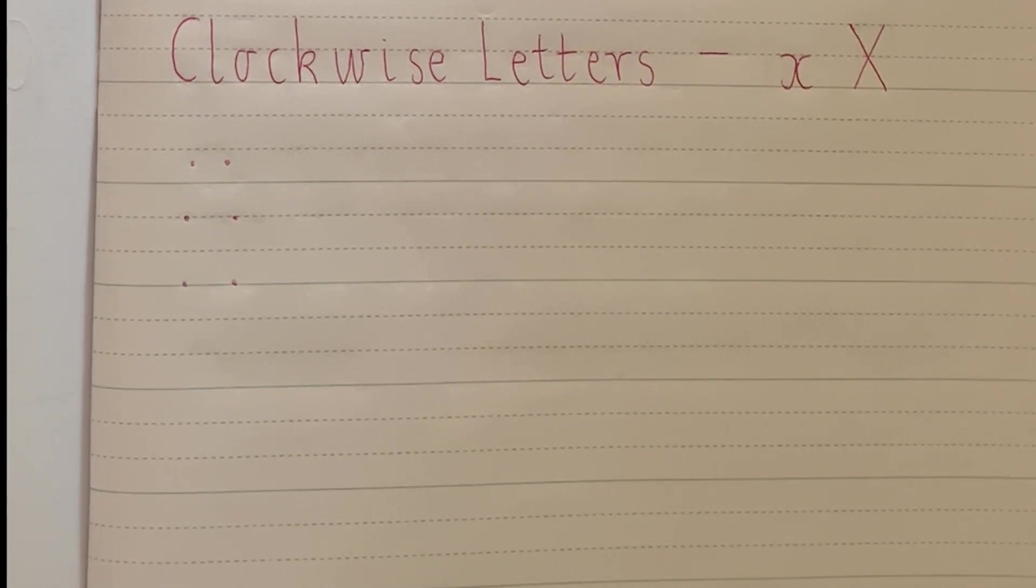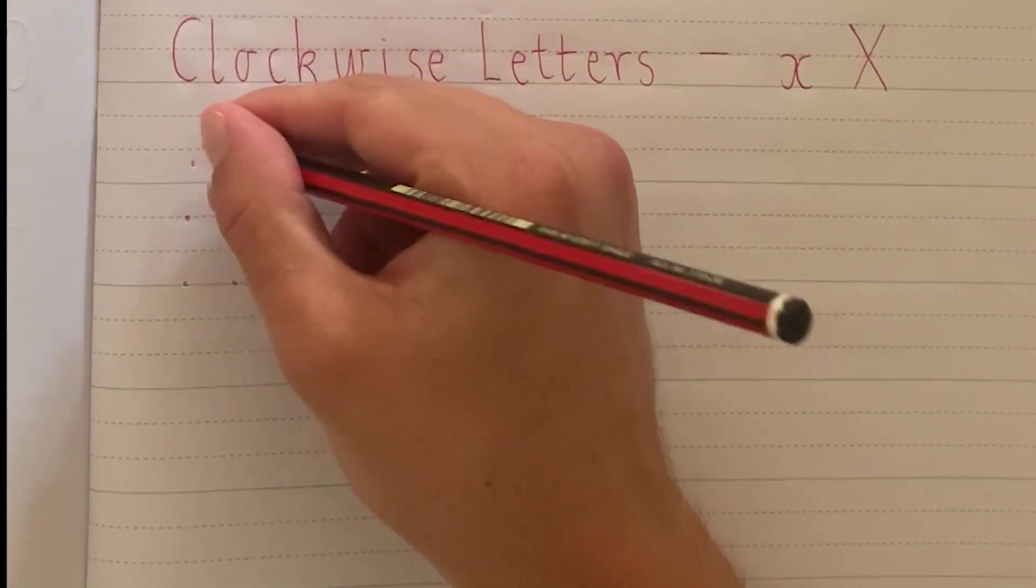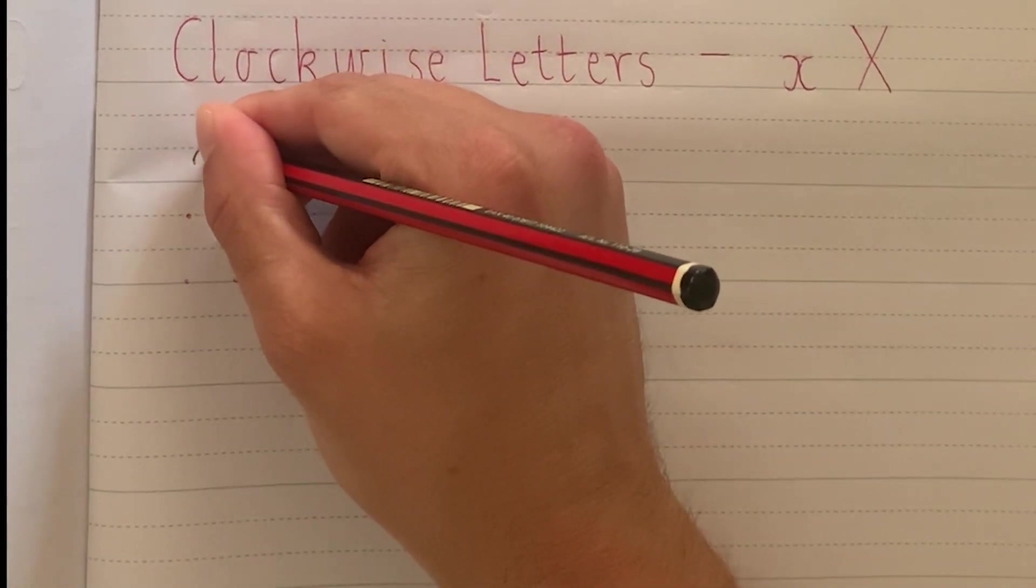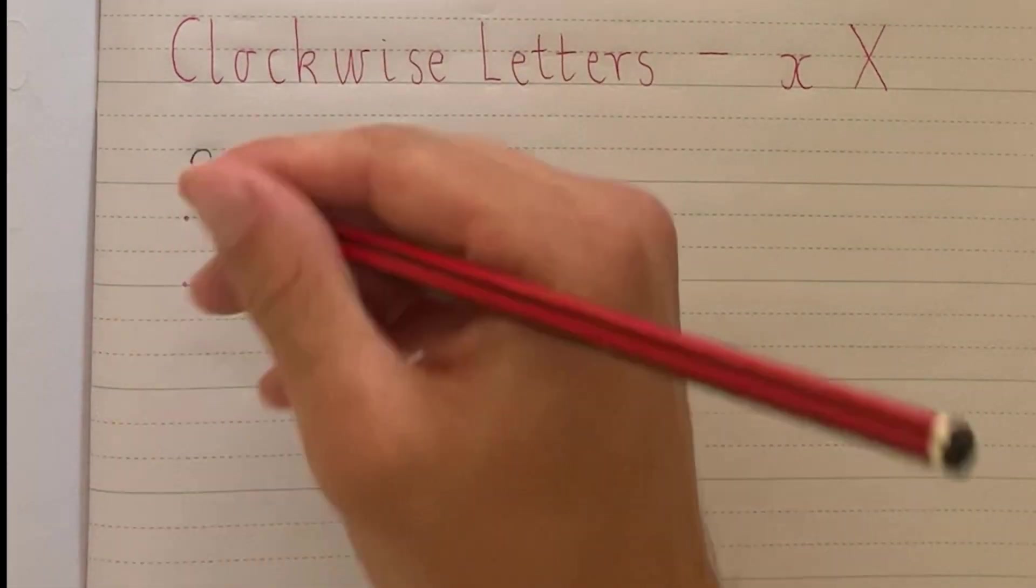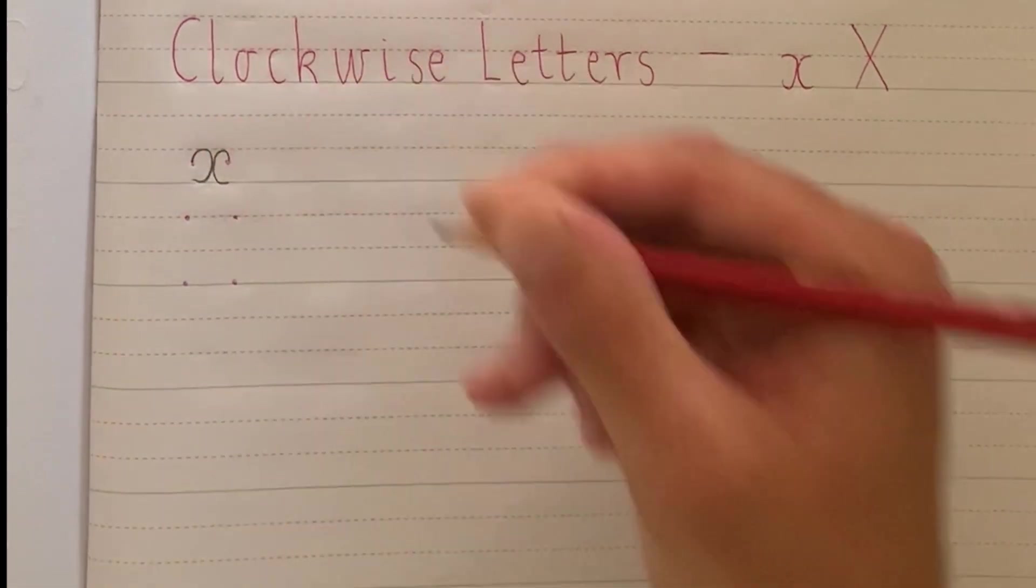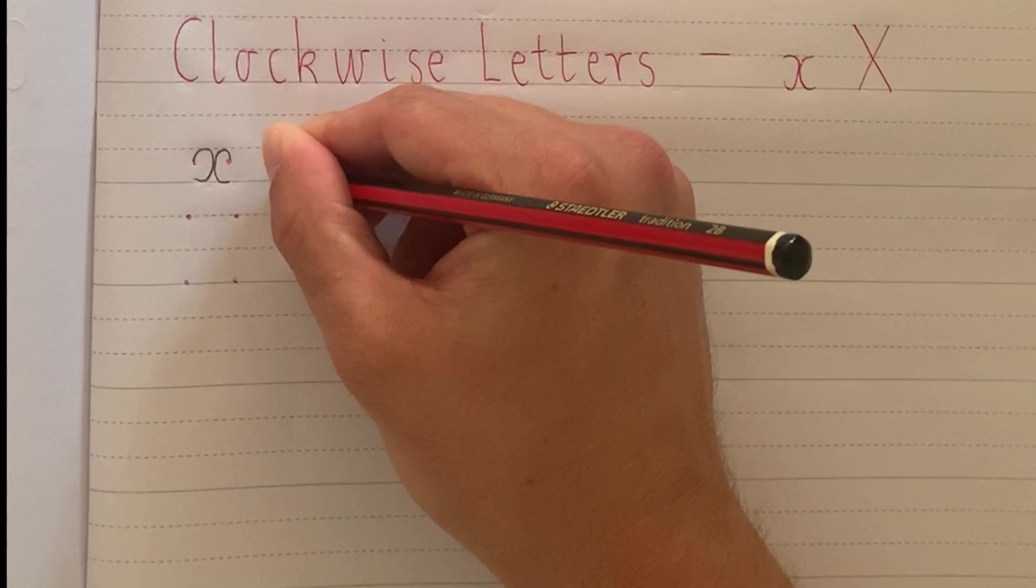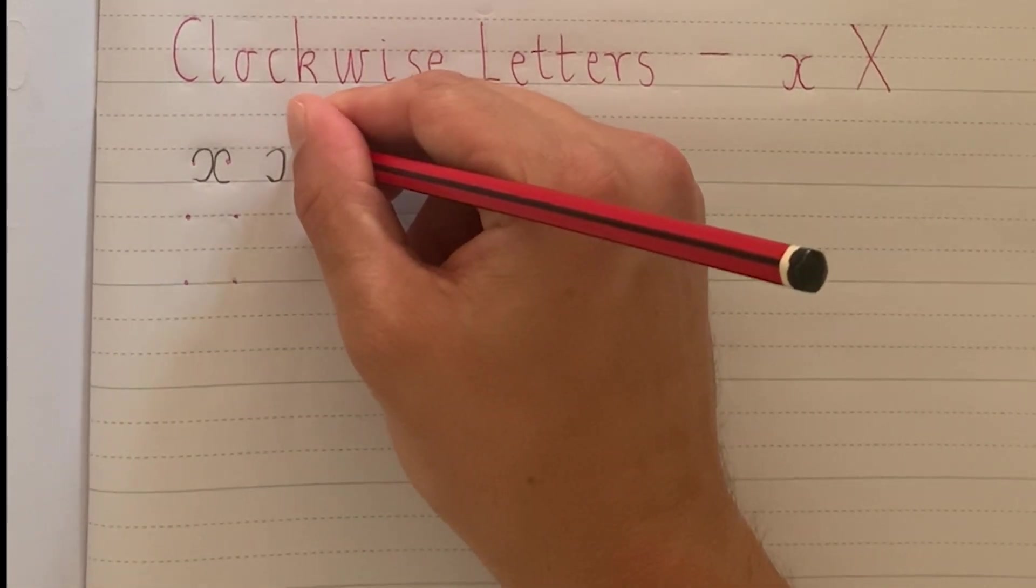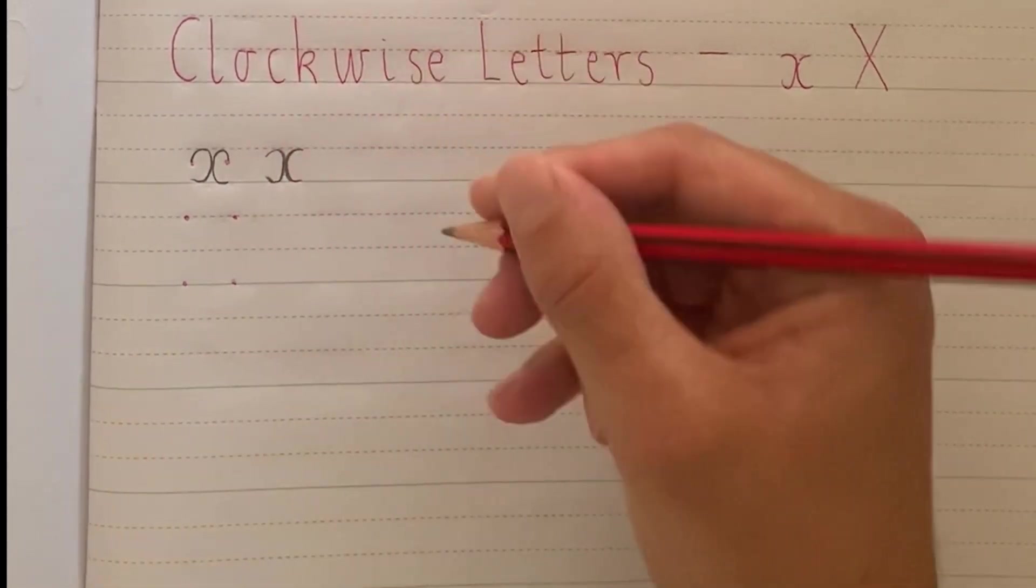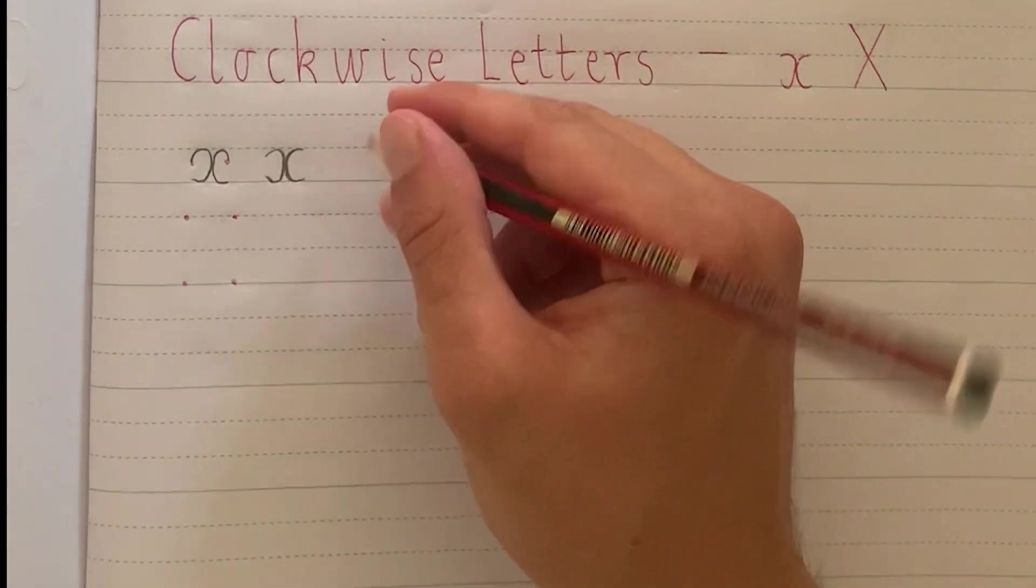So we're going to start with the lowercase x. The lowercase x begins just below the dotted third and it's sort of like doing a back to front c. Then we start over here and we do the same thing, this time an actual c. Now I've probably put the dots a little bit low, so I'm going to just show you another example. Looks a bit like that. Two c's, one back to front and one the right way around.